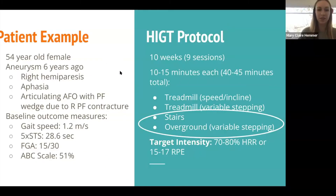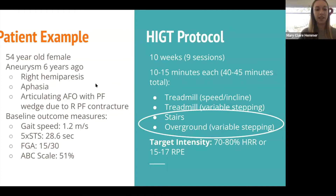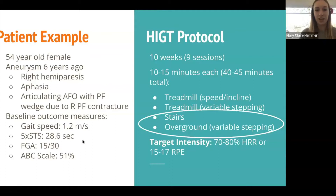My patient was a 54-year-old female. She had an aneurysm six years ago that resulted in right hemiparesis, aphasia, and a plantar flexion contracture, for which she had an articulating AFO with a plantar flexion wedge. At baseline, her gait speed from her 10-meter walk test was actually pretty good at 1.2 meters per second, and aside from the AFO, she didn't walk with any assistive devices. However, with her five-time sit-to-stand, her FGA, and the ABC balance scale, she was actually at more of a fall risk.